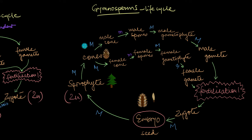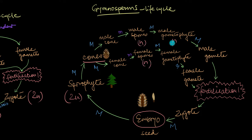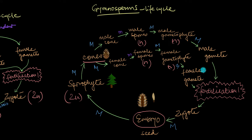In gymnosperms, the gametophyte generation takes place inside hard structures called cones, which are borne on the diploid sporophyte. Inside a cone, haploid spores are formed, which develop into haploid gametophytes. A male cone has male spores that develop into the male gametophyte with the male gamete, and a female cone has female spores that develop into the female gametophyte with the female gamete.